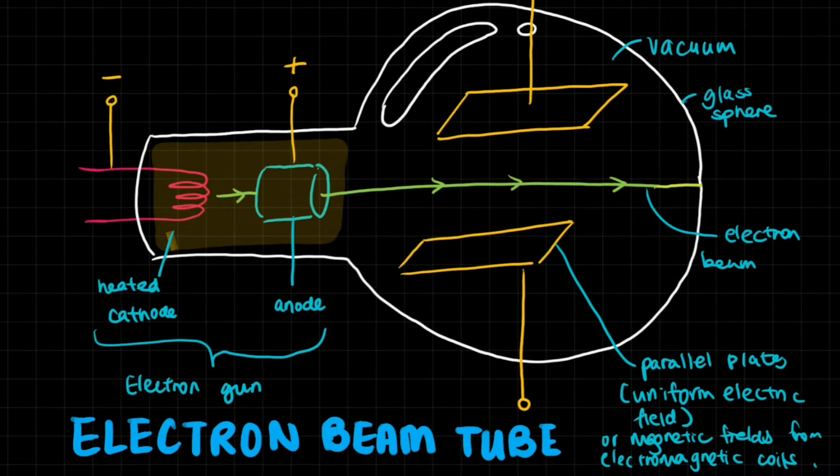There's an electron gun that produces the electrons and this is directed to the screen by the use of parallel plates. They form a uniform electric field. For instance, if this was positive and this was negative, the flow of electrons would veer off to the positive because electrons are attracted to the opposite charge. The electron gun has a heated cathode, which is a heated piece of metal that emits electrons. That is called thermionic emission.